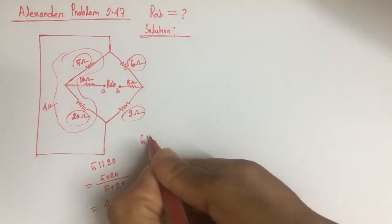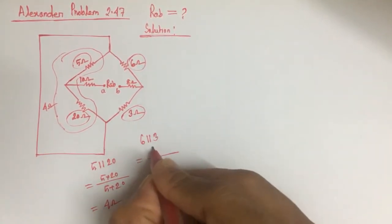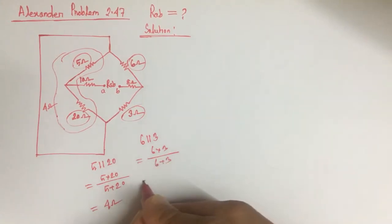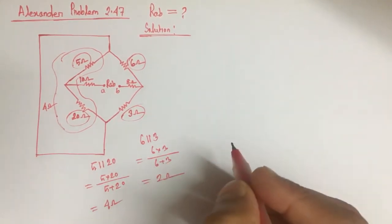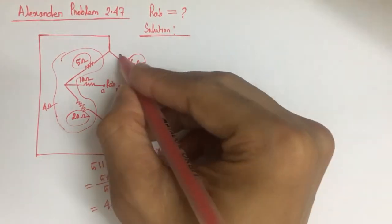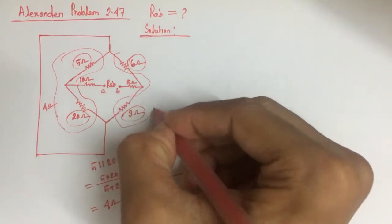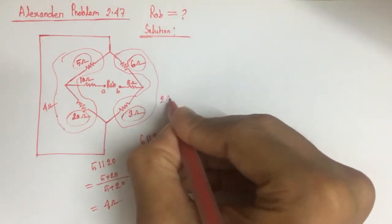6 ohm resistance in parallel with 3 ohm resistance can be replaced by resistance of 2 ohm. So equivalent resistance of this 6 and 3 ohm parallel is 2 ohm.